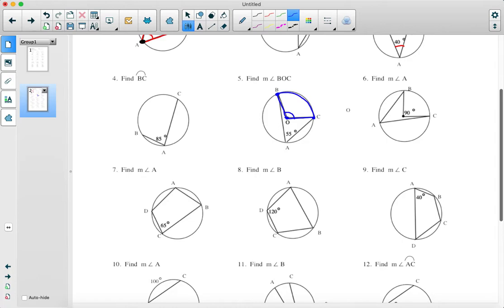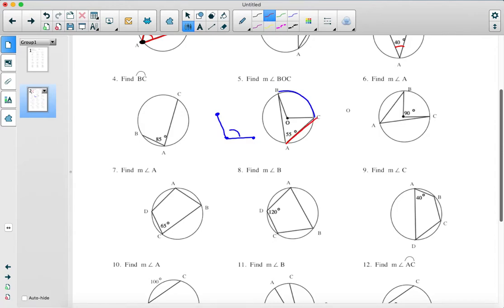When they ask you to find the measure of angle BOC, we need to know what the measure of arc BC is. If we know the measure of arc BC, then the angle will be the same thing. Let's look at the inscribed angle, because that's the information they gave us. The inscribed angle is 55 degrees, therefore the arc will be twice that, which is 110 degrees for arc BC. The central angle is the same as the arc, so the central angle is also going to be 110 degrees.